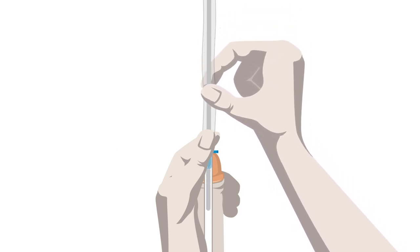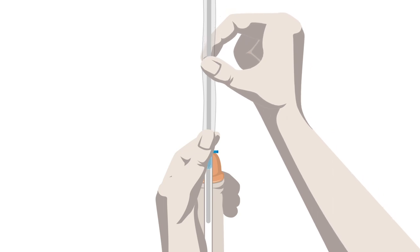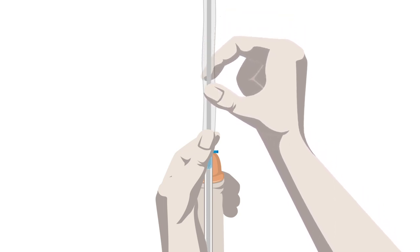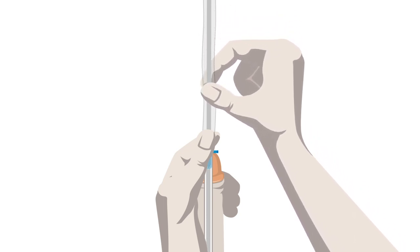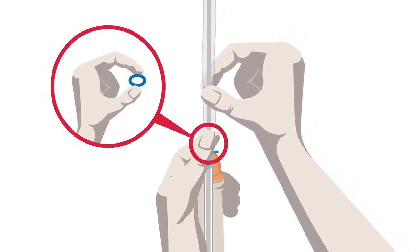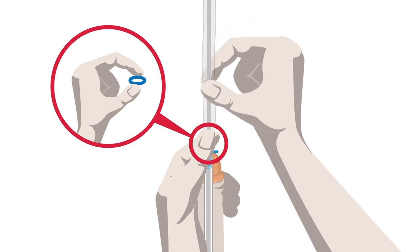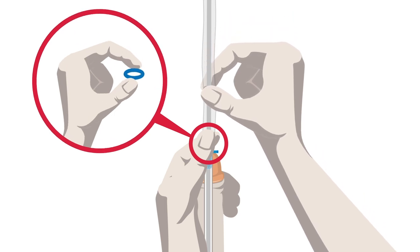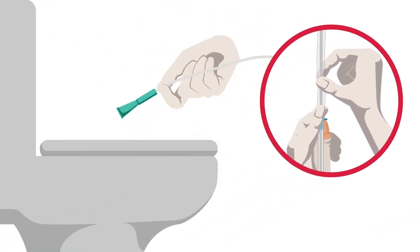Start to insert the catheter in short, incremental pushes to allow the catheter to gently move up the urethra into the bladder as instructed by your healthcare professional. You can steady the catheter by putting pressure on the barrel whilst you move your hand to insert further. Insert the catheter forward until urine starts to flow. Be prepared to point the funnel of the catheter into the direction of the toilet or receptacle before the urine starts to flow.